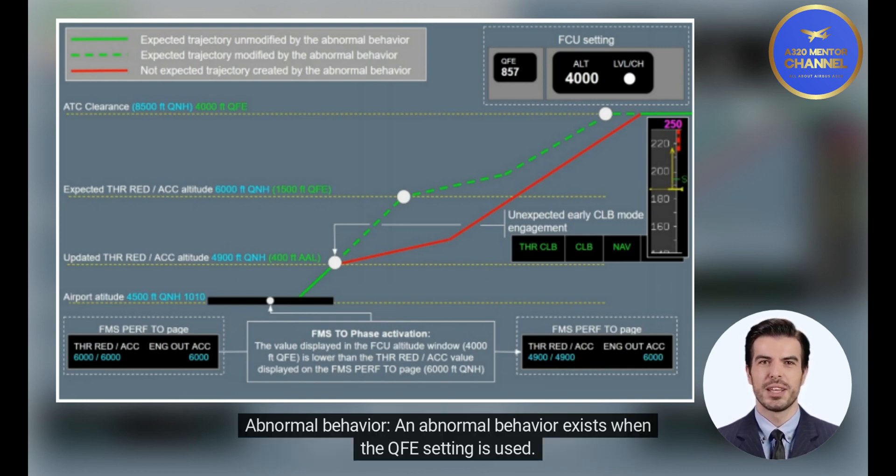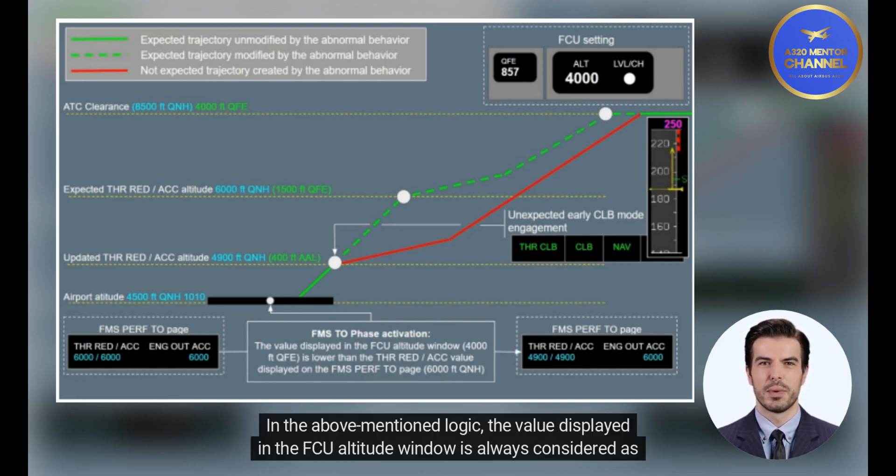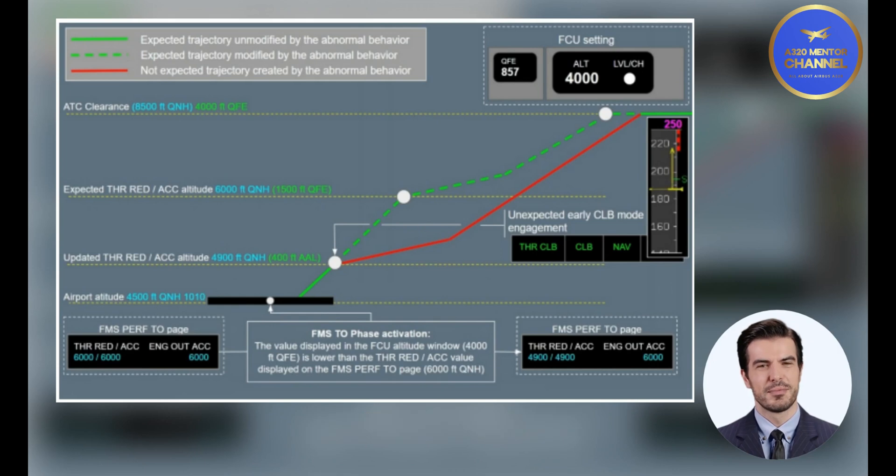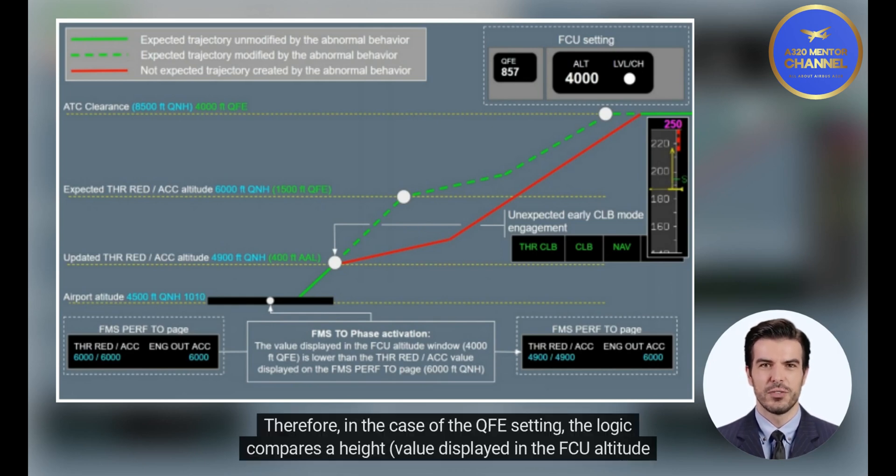Abnormal Behavior. An abnormal behavior exists when the QFE setting is used. In the above-mentioned logic, the value displayed in the FCU altitude window is always considered as an altitude despite the QFE setting. Therefore, in the case of the QFE setting.